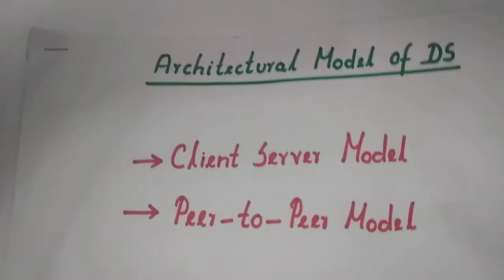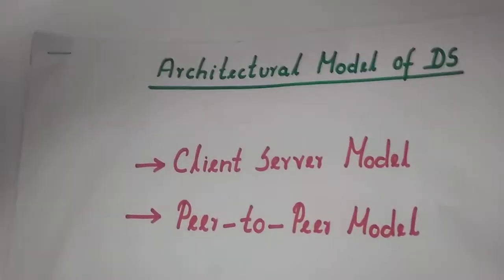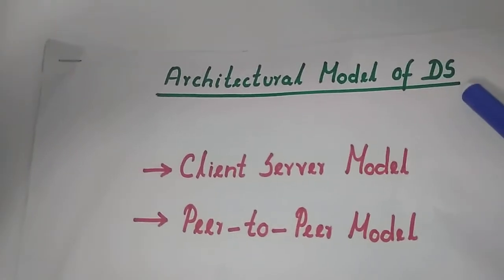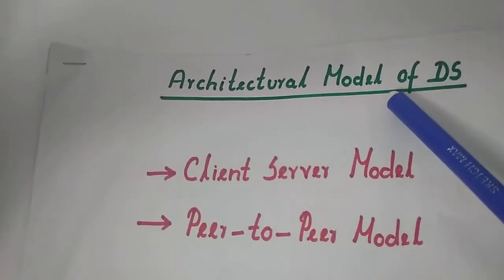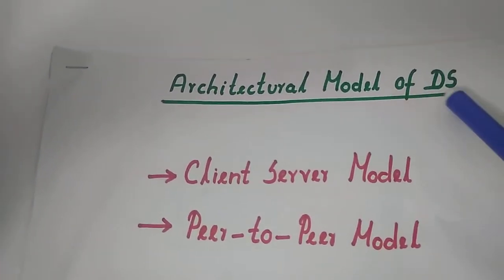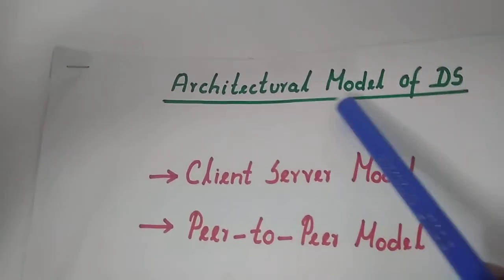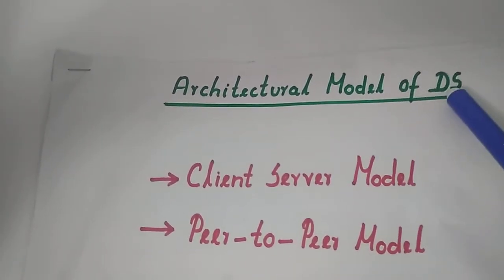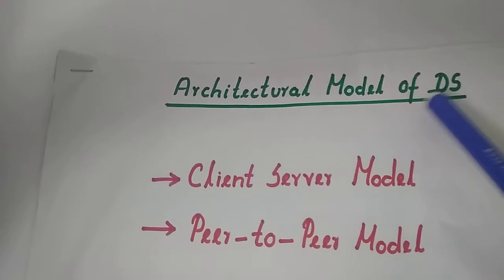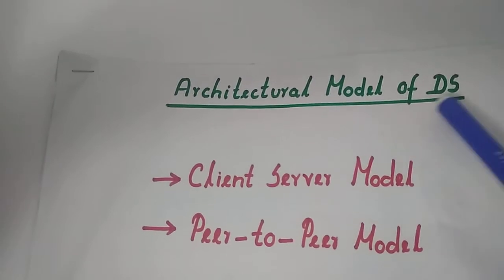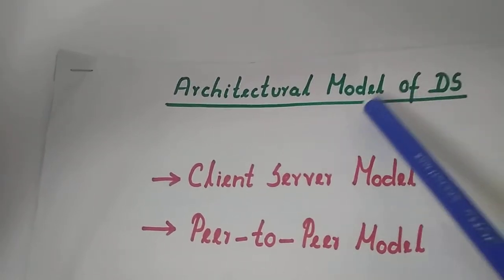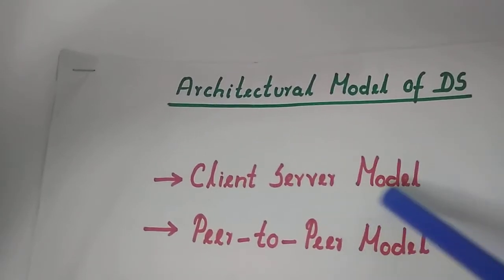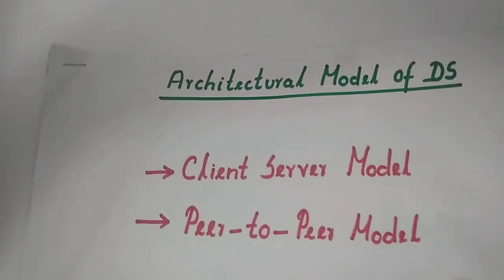Hi friends, welcome back to the channel Ani's Lectures. Here we are going to discuss the topic architectural model of a distributed system. Architectural model describes how these distributed network components are interconnected and interact with each other. The architectural model is classified into two types: one is a client-server model and another one is a peer-to-peer model.